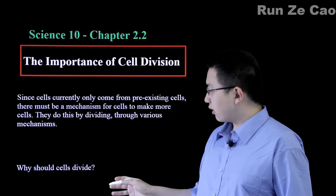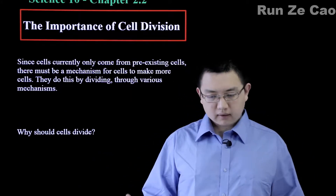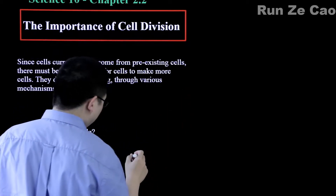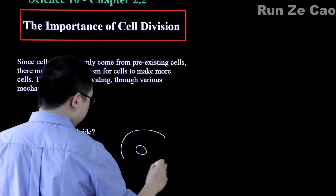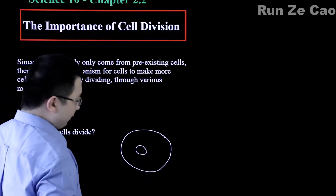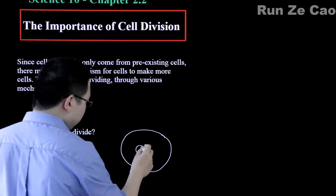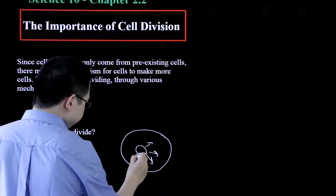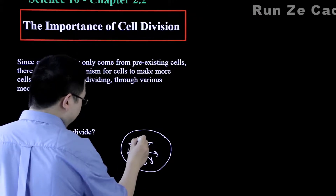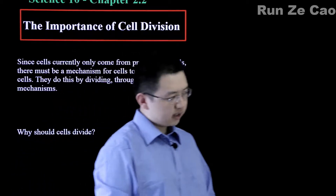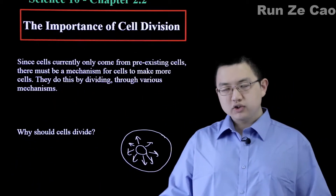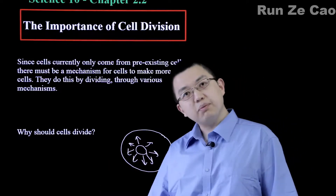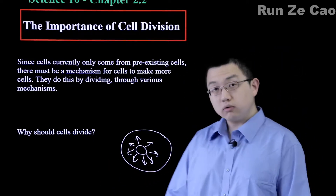But why should cells divide? Well, if a cell gets too big, cells rely on a mechanism called diffusion. Think about dropping ink into water. You have a big bowl of water, and you start off with a little blob of ink. The particles move around randomly and they tend to spread out. If you wait for this ink blob to reach the edge of the bowl, it takes a long time.